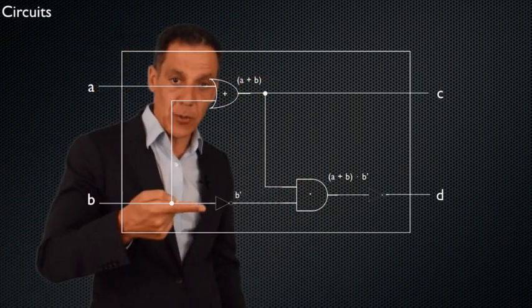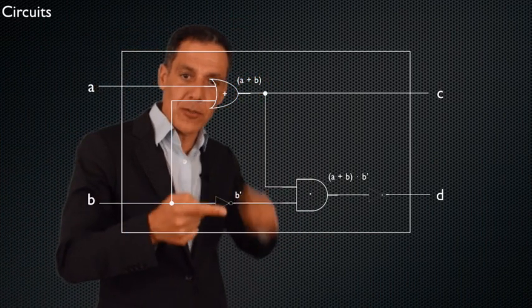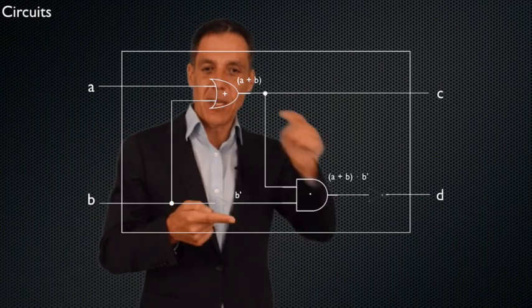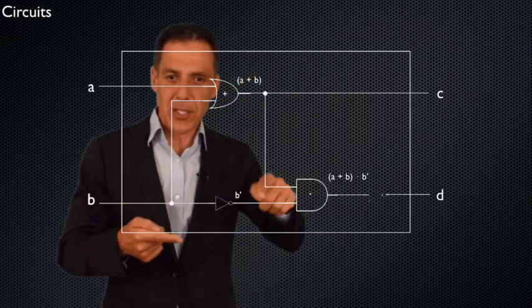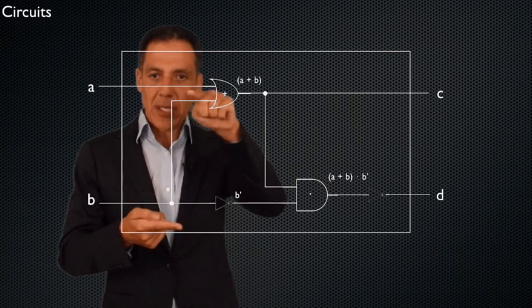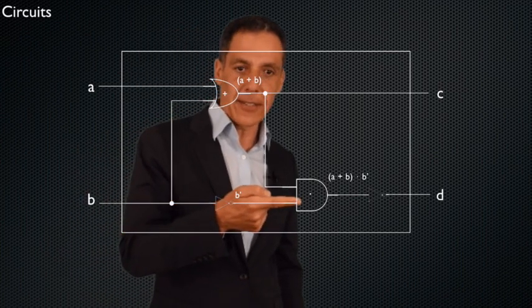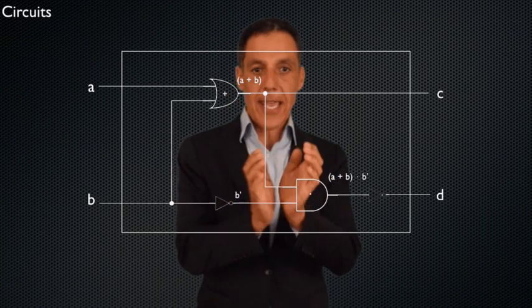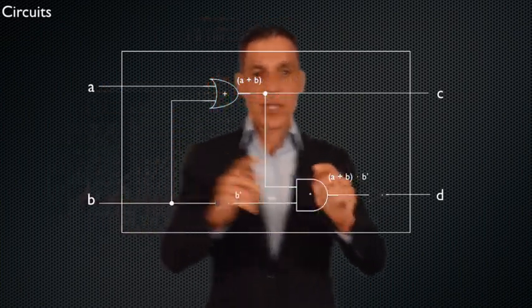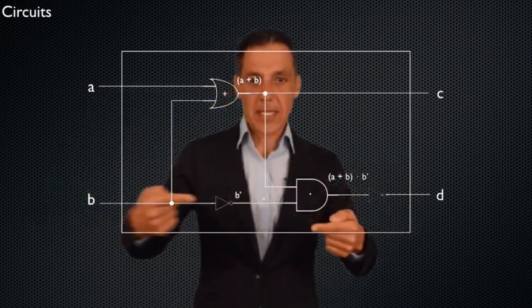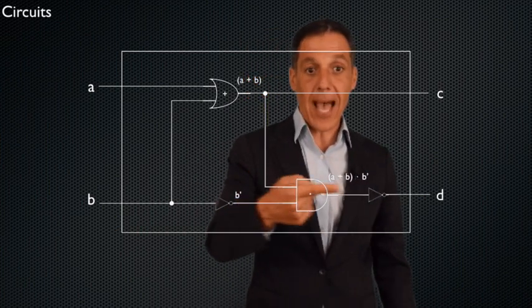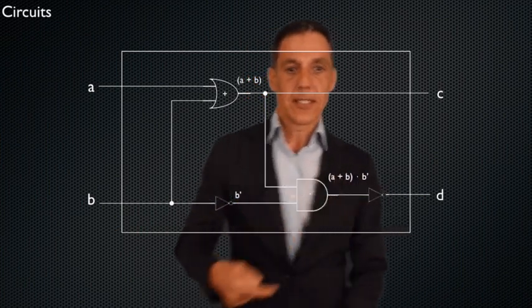Well, let's see. B comes in here. It goes through a NOT gate, which I'll denote as B with a hashtag. Sometimes you'll see a B with an apostrophe. Sometimes you'll see B with a line over the top of it. So that's also coming into the AND gate. So I'm ANDing A or B, the output of this, and not B going through here. And then I'm going to NOT the whole thing to get D at the end.